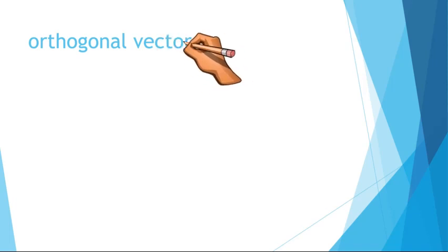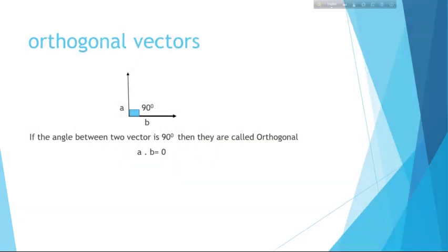Now, what are orthogonal vectors? If the angle between two vectors a and b is 90°, then they are called orthogonal vectors. In this case, a·b = 0 because cos 90° = 0.